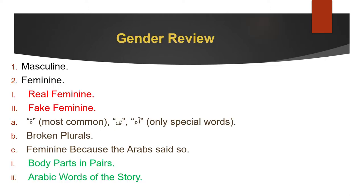In the last video we learnt about gender, the third property of an ism. Today we will just review it quickly. The first thing we learnt is there are two types of words: masculine and feminine. We assume that every word we see is masculine unless it shows signs of femininity.